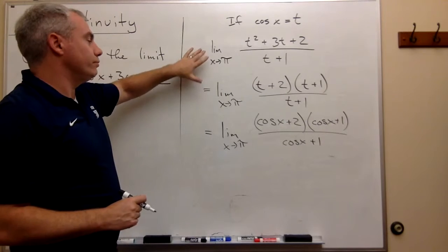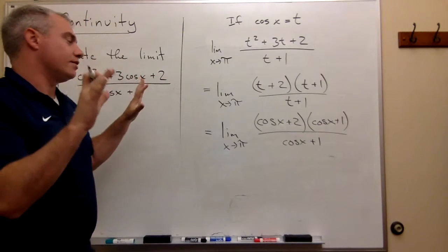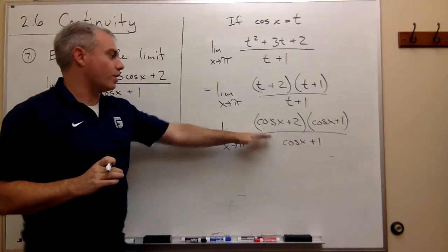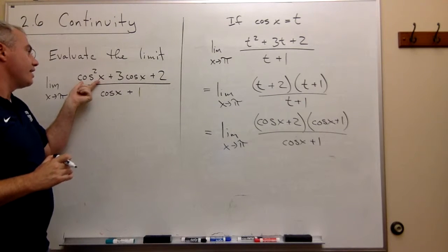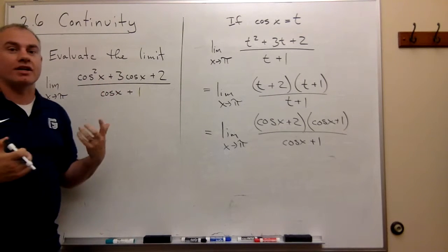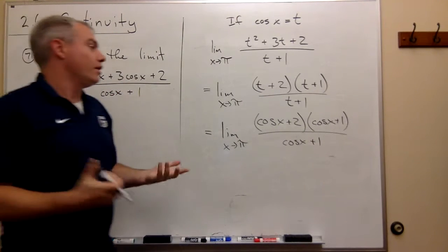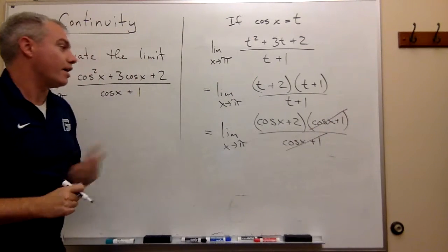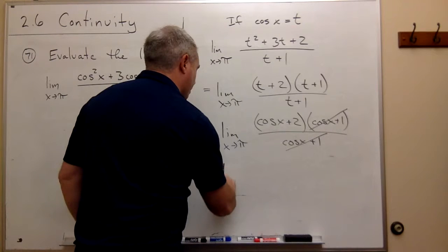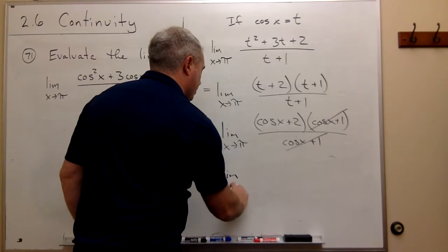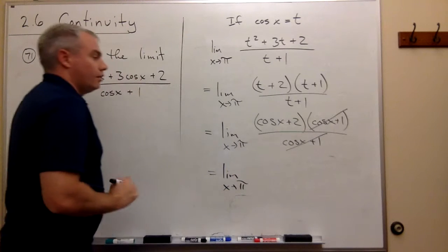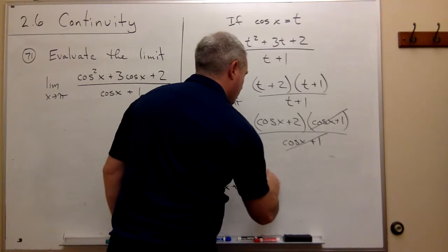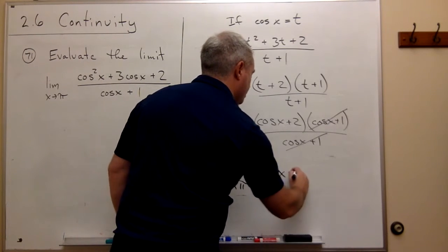Now these two steps you might say not needed. You could jump right to this one if you can recognize that cosine of x can be treated as a variable itself. Now we can cancel the cosine x plus 1 and all we're left with is the limit as x goes to pi of cosine of x plus 2.